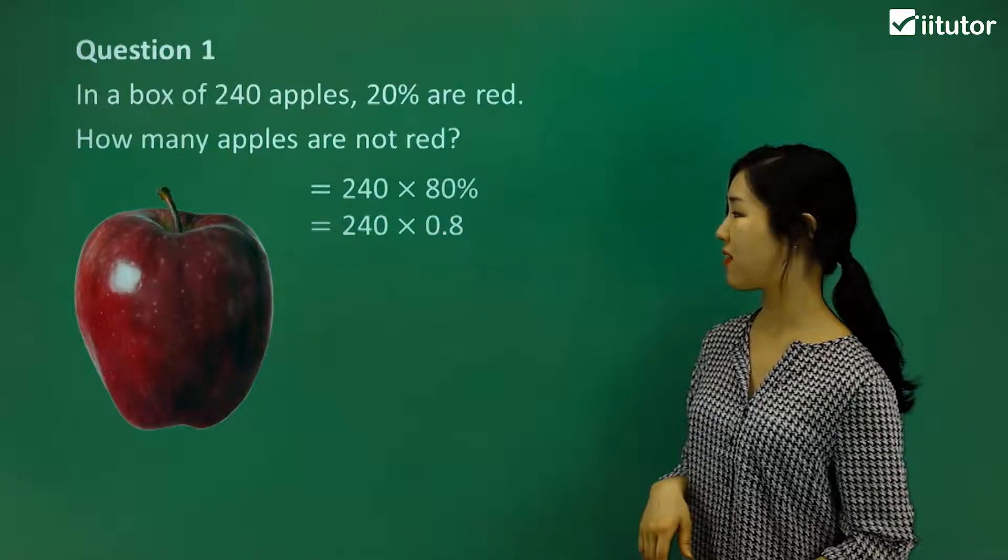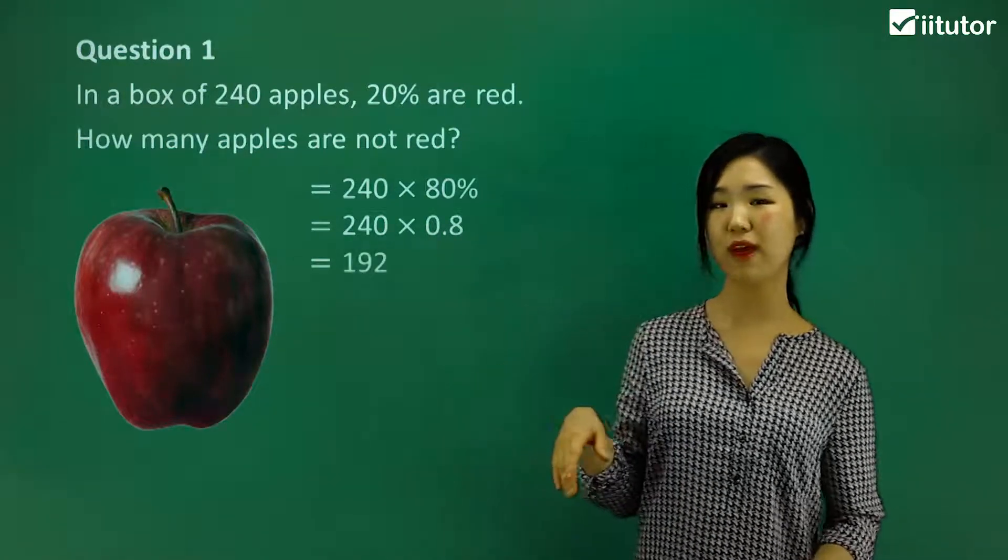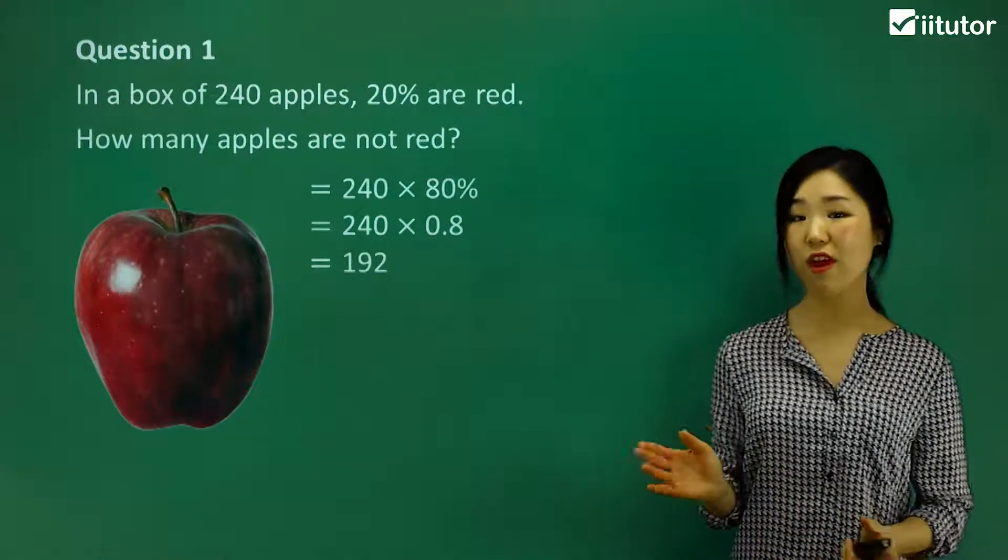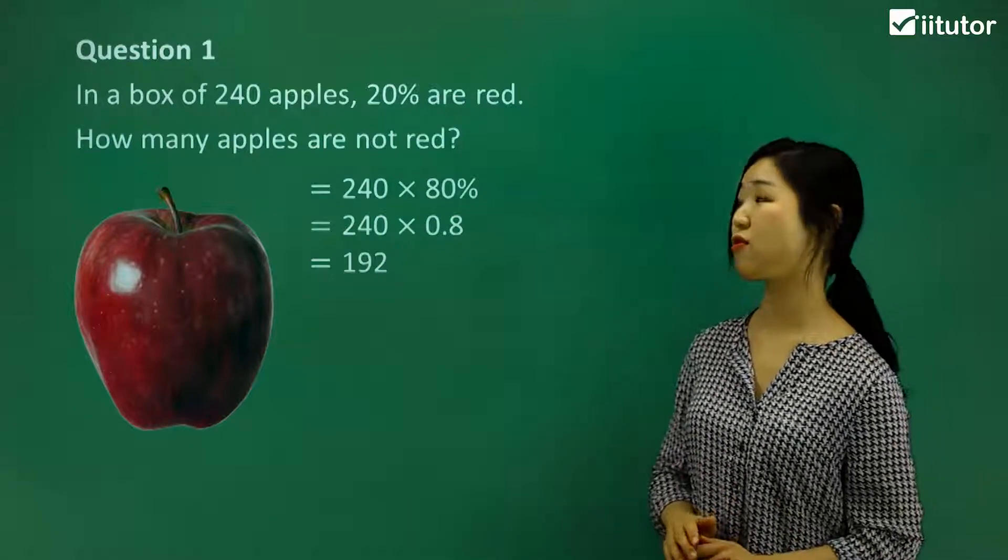80% you can change to a decimal if you like, 0.8. And if you multiply it, we get 192. So 192 apples out of the 240 are not red.